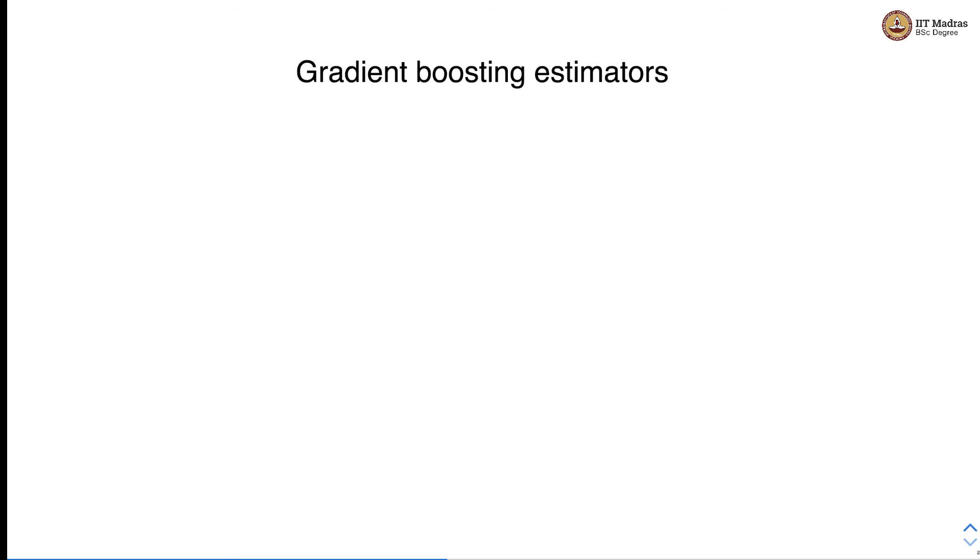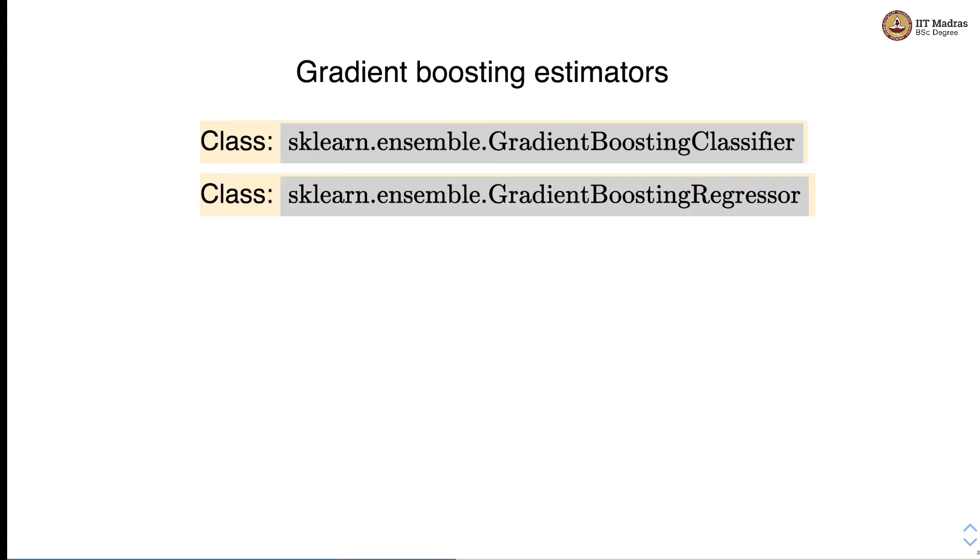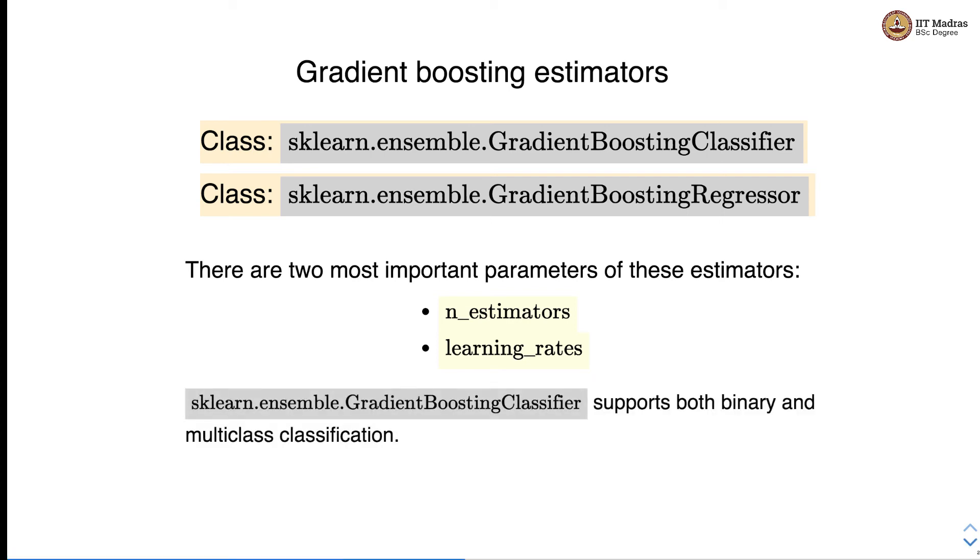Let's look at gradient boosting estimators. There is a gradient boosting classifier and gradient boosting regressor and there are two important parameters in these estimators: number of estimators where the boosting will be terminated and a learning rate. Gradient boosting classifier supports both binary and multi-class classification.